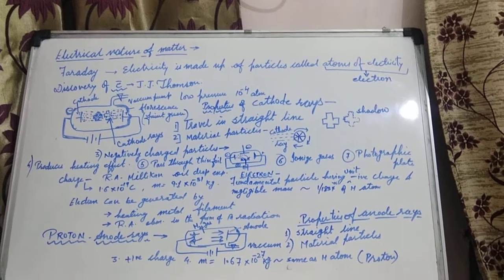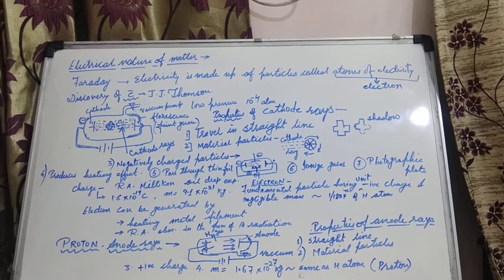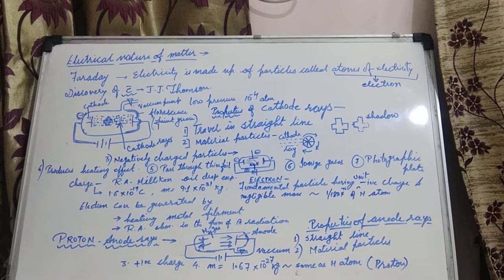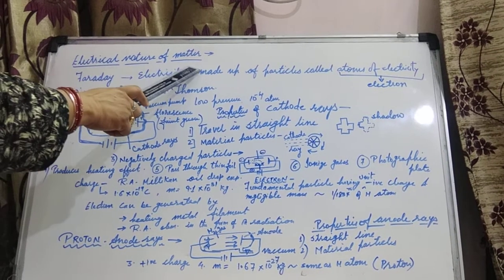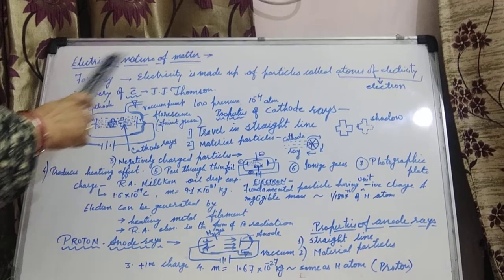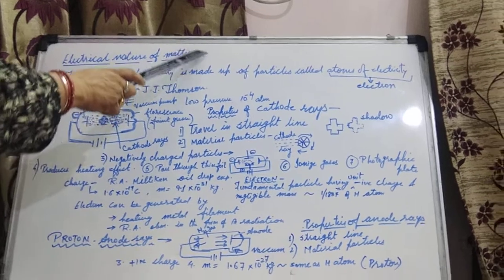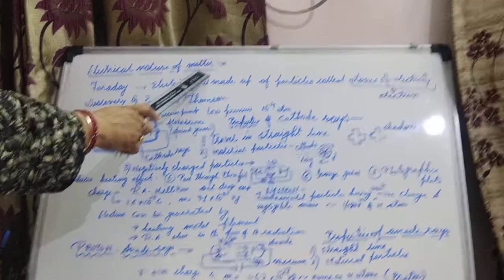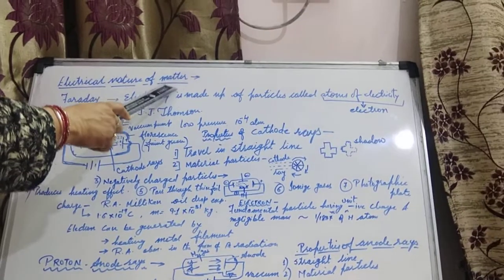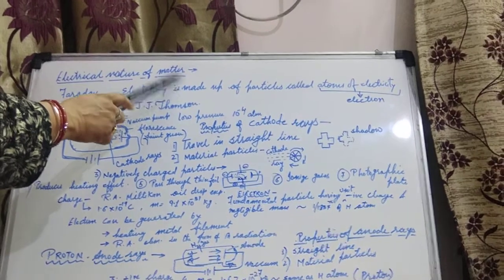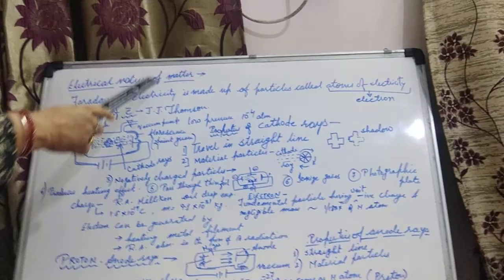Hello students, we are proceeding further in atomic structure. Today I am taking electrical nature of matter. What do we mean by electrical nature of matter? Firstly, I am making you clear what is matter. Matter is anything which occupies space and has mass.